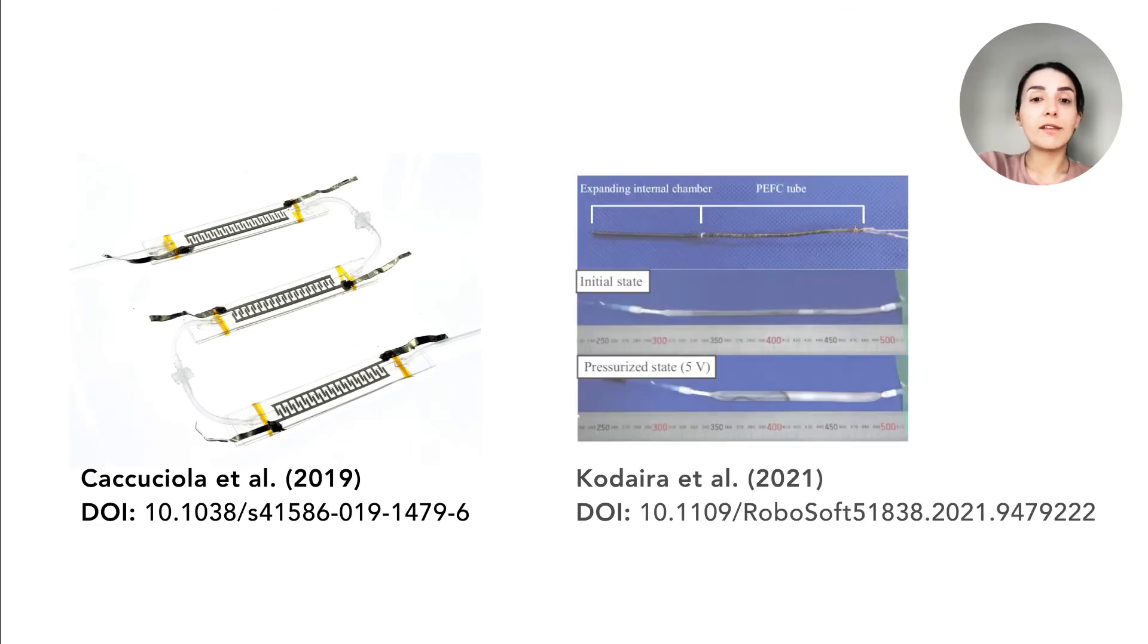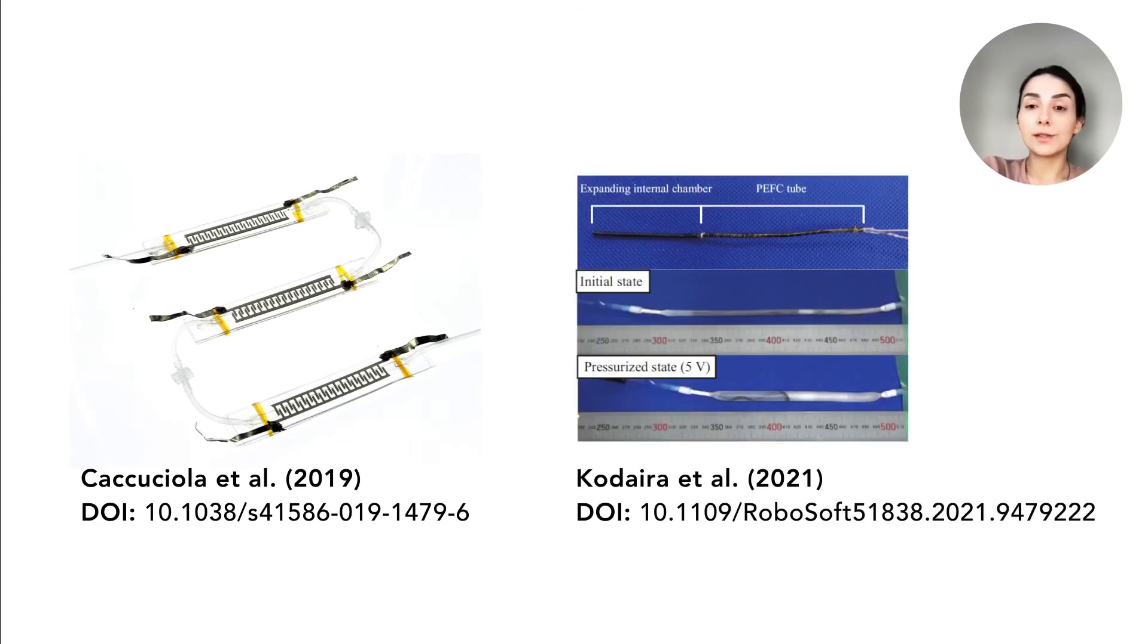A widely known limitation of fluidic systems is the fluid source. Recently, researchers have investigated air hose-free systems based on soft and stretchable pumps or a soft polymer electrolyte fuel cell tube, both of which can realize electrically controlled actuation with a soft body. In future, we aim to employ such alternative pumping systems towards making self-contained fluidic textiles and fashion.